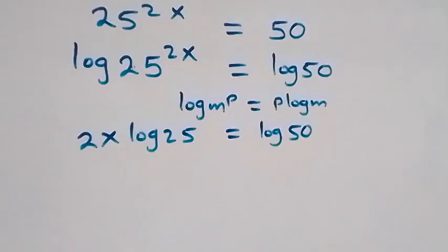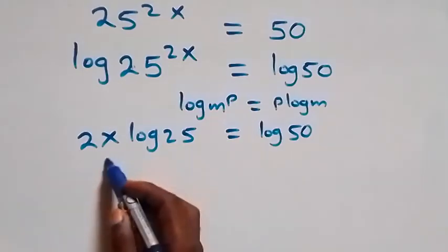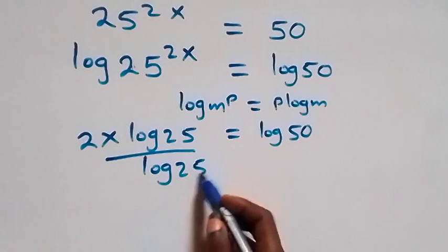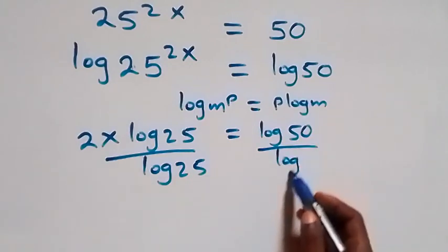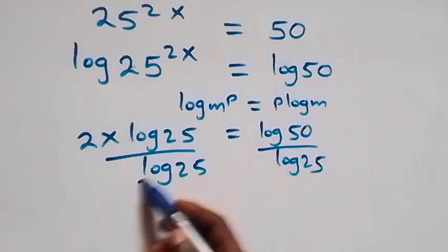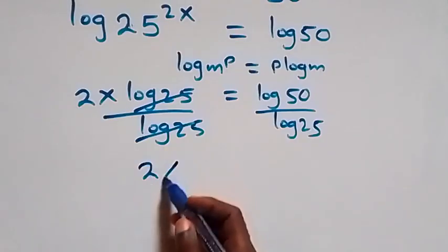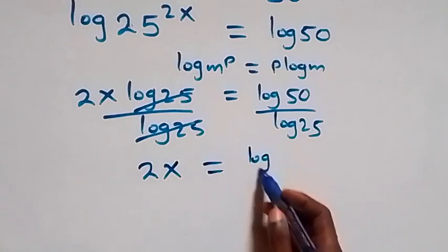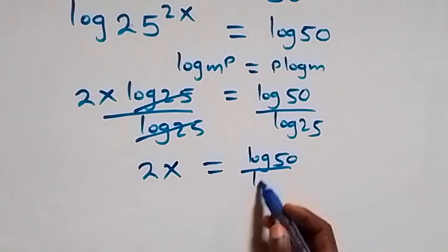Our next step is to divide both sides by log 25. This log 25 cancels each other, so we have 2x equals to log 50 over log 25.